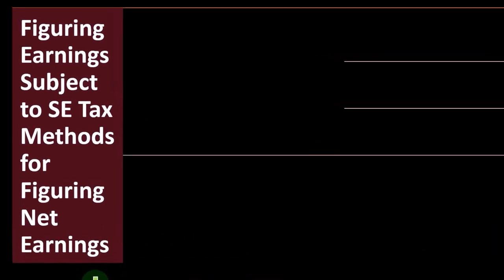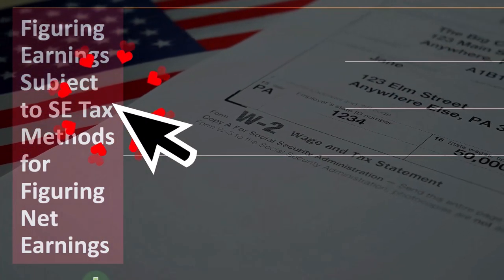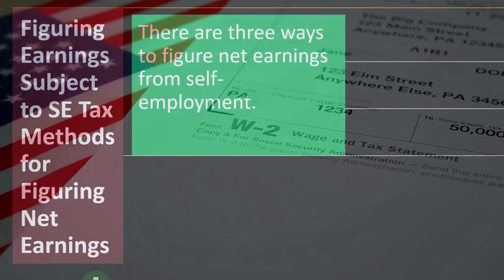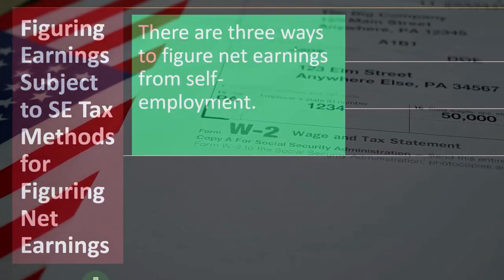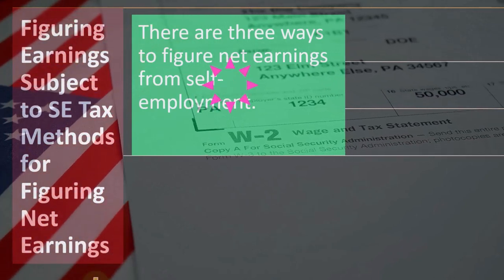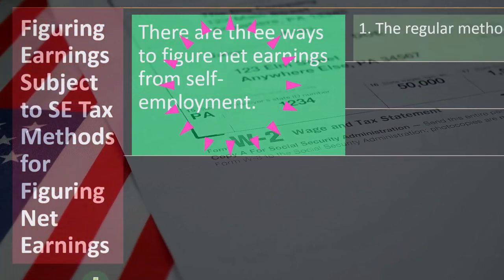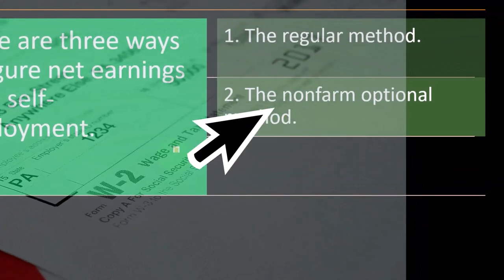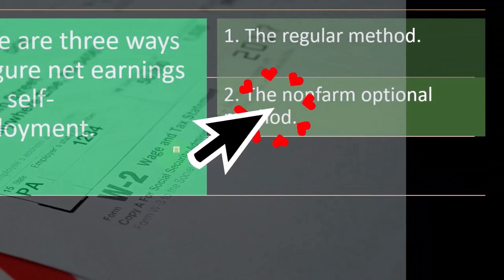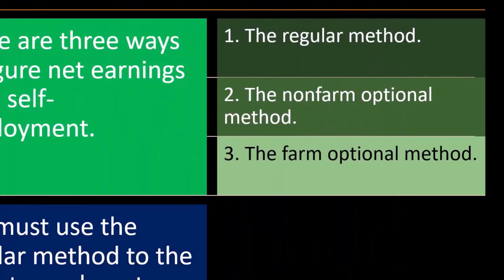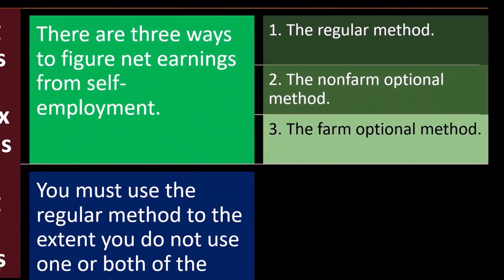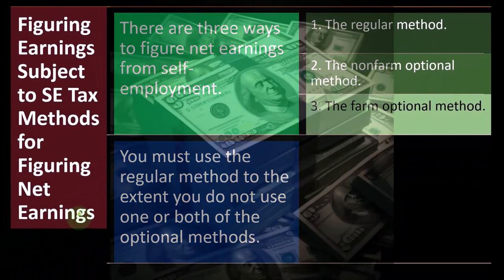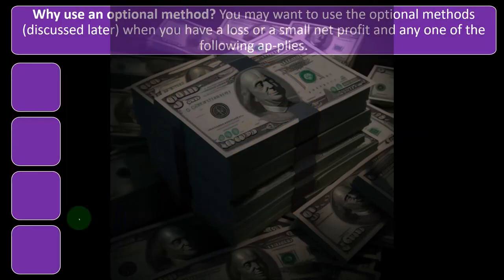There are three ways to figure net earnings from self-employment: one, the regular method; two, the non-farm optional method; three, the farm optional method. You must use the regular method to the extent you do not use one or both of the optional methods.